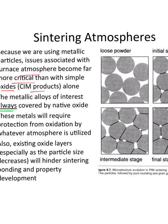Metallic particles are always covered by some type of oxide layer. We're talking about cobalt chrome, titanium aluminide, stainless steel — all these metals consist of surfaces that will typically be oxidized. Unless we're working with platinum or gold particles, we're going to be dealing with oxidation. These metals typically require some protection from oxidation by whatever atmosphere is used.